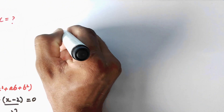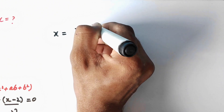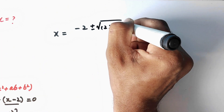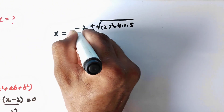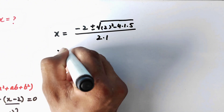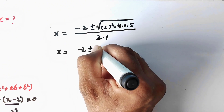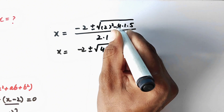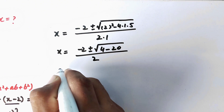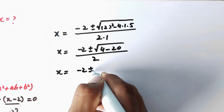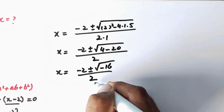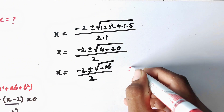Substituting, we get x equals minus 2 plus or minus square root of (2 squared minus 4 times 1 times 5), over 2 times 1. That becomes x equals minus 2 plus or minus square root of (4 minus 20), over 2, which gives square root of minus 16.